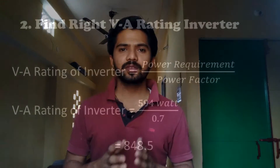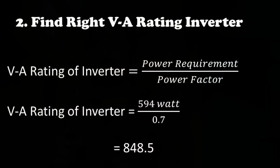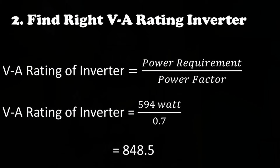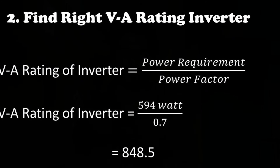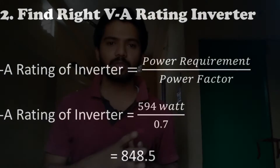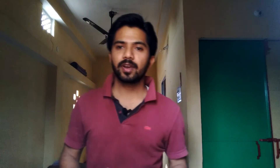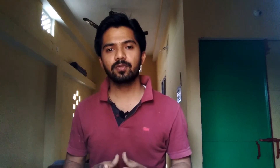So the VA rating of the inverter is the power requirement of 594 divided by the power factor of 0.7, giving a value of 848.5 VA. In the market, you can easily get 800, 900, and 1100 VA rating inverters. So I choose a 900 VA rating inverter as per my result. You can choose as per your own result.